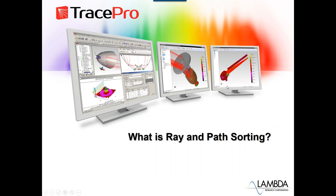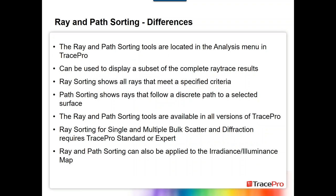So what is ray and path sorting? The ray and path sorting tools are located in the analysis menu in TracePro, and they can be used to display a subset of the complete ray trace results. Ray sorting allows you to show all rays that meet a specified criteria, whereas path sorting shows rays that follow a discrete path to a selected surface. These tools are available in all versions of TracePro, although some features for ray sorting — such as single and multiple bulk scatter and diffraction — require TracePro standard or expert. The tools can also be applied to irradiance and illuminance maps.